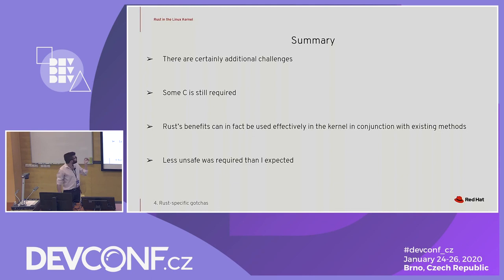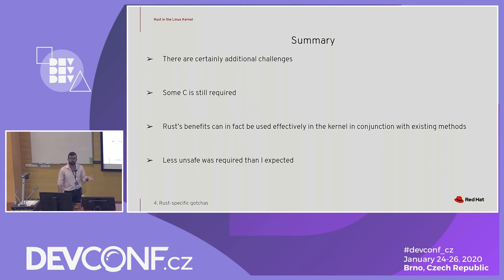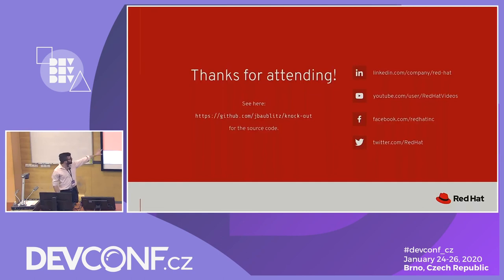In summary: there are additional challenges using Rust and some C is still required. But Rust's benefits can be used effectively in the kernel — we get a lot for free in terms of resource management and cleanup without a performance hit. Ultimately, there was a whole lot less unsafe than I thought was initially going to be required. Here is the link to my source code if you want to see a more in-depth example.